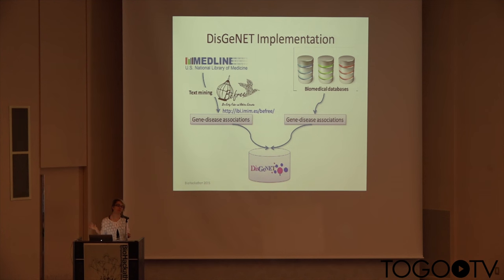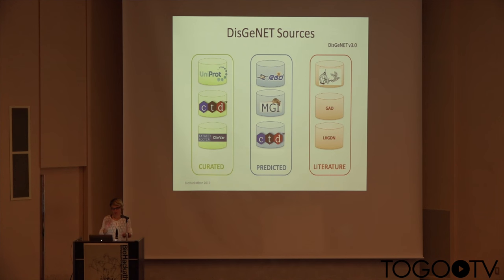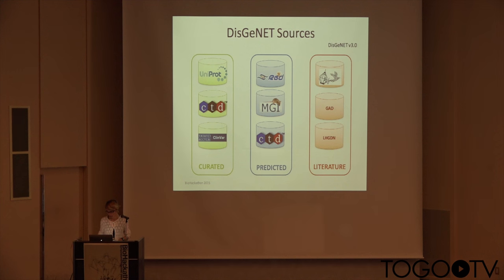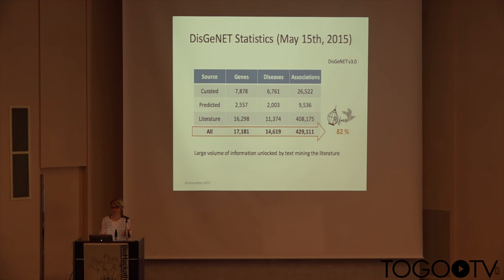We also integrate gene-disease associations from several biomedical open data sources in a local database. In the current release, we have nine different sources classified depending on the level of evidence and type of curation — as curated, as predicted, from animal model resources, and from literature via text mining. About 80% of the information gathered is coming from B3, meaning it comes from text mining.